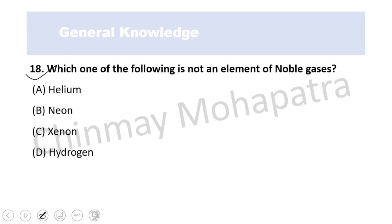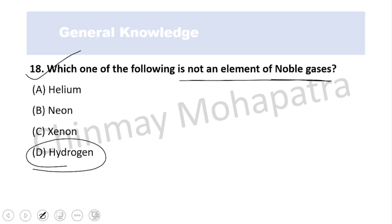Question number 18: Which one of the following is not a noble gas? Hydrogen, helium, neon, and xenon — among these, hydrogen is not a noble gas; helium, neon, and xenon are all noble gases.